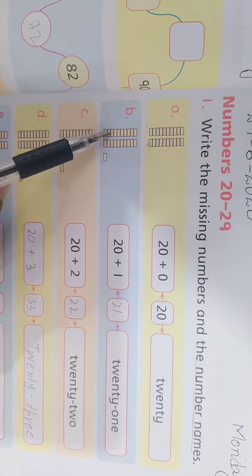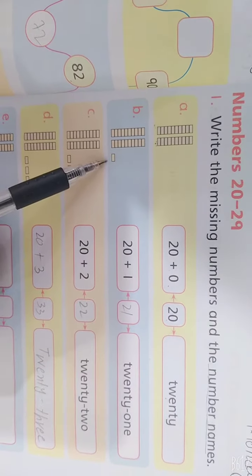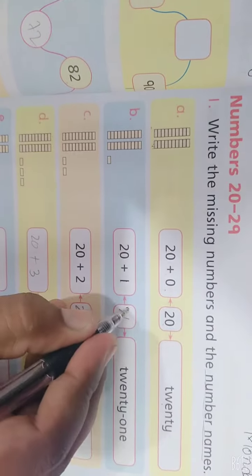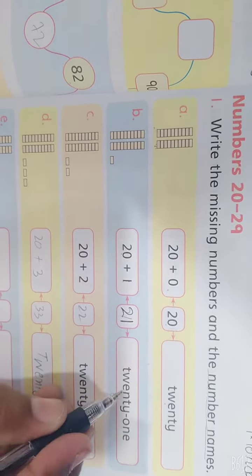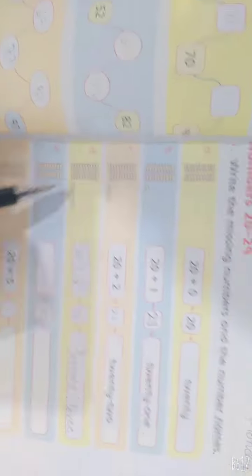Next, B part में two stacks है 10s के और one ones है। यह one ones है और 20 के stacks है तो that makes 21 और इसको हम लिखेंगे 21। इसी तरह third अब हम किसी और को check करते हैं।